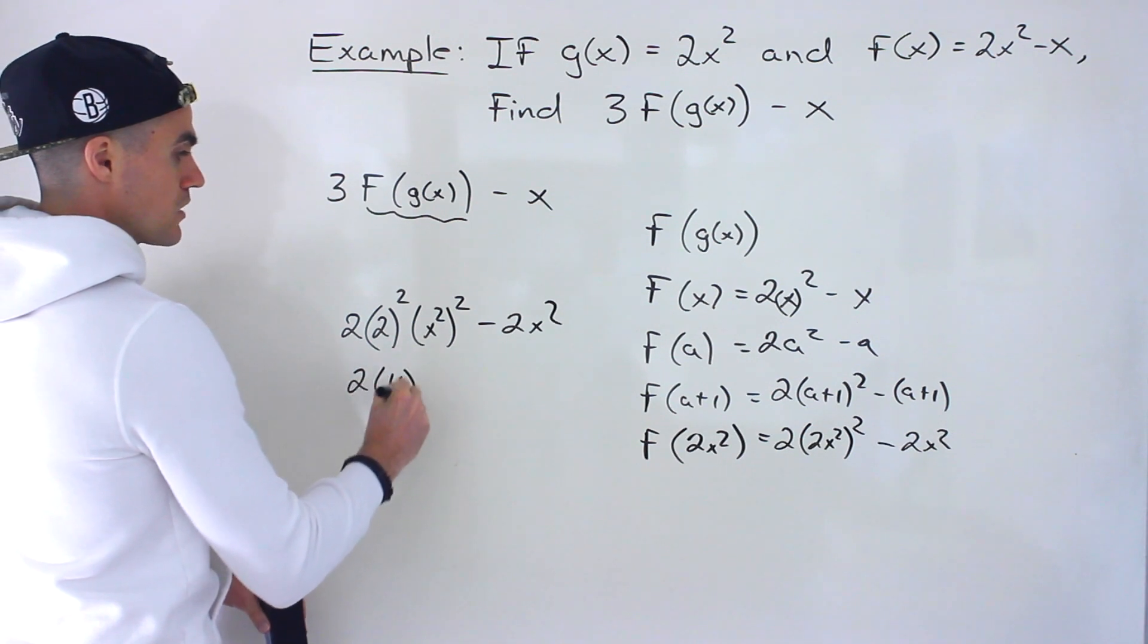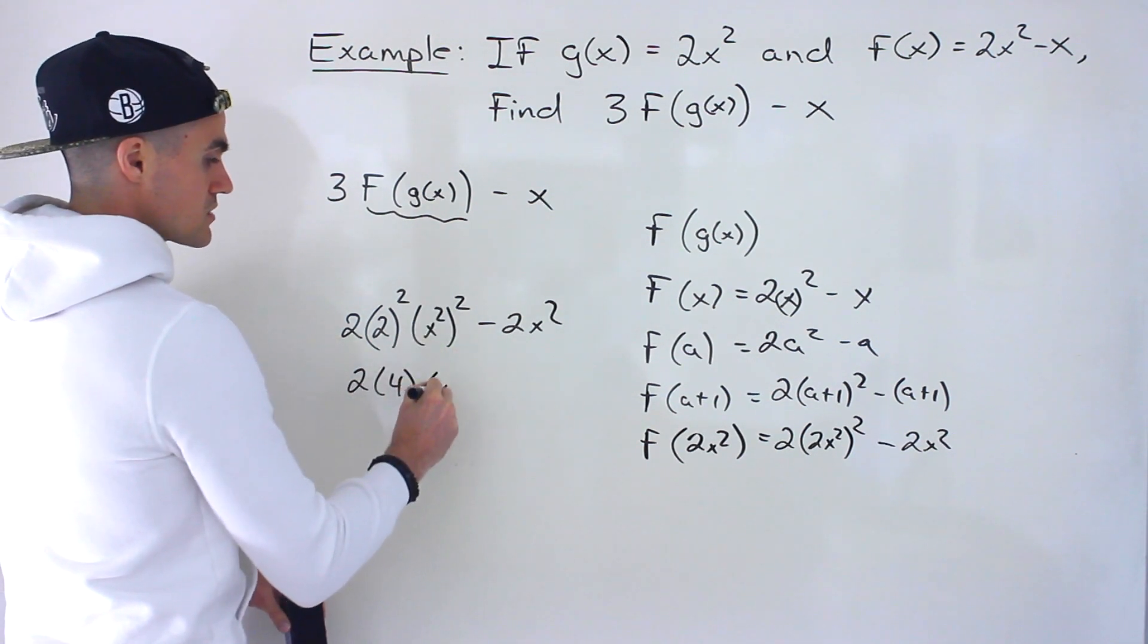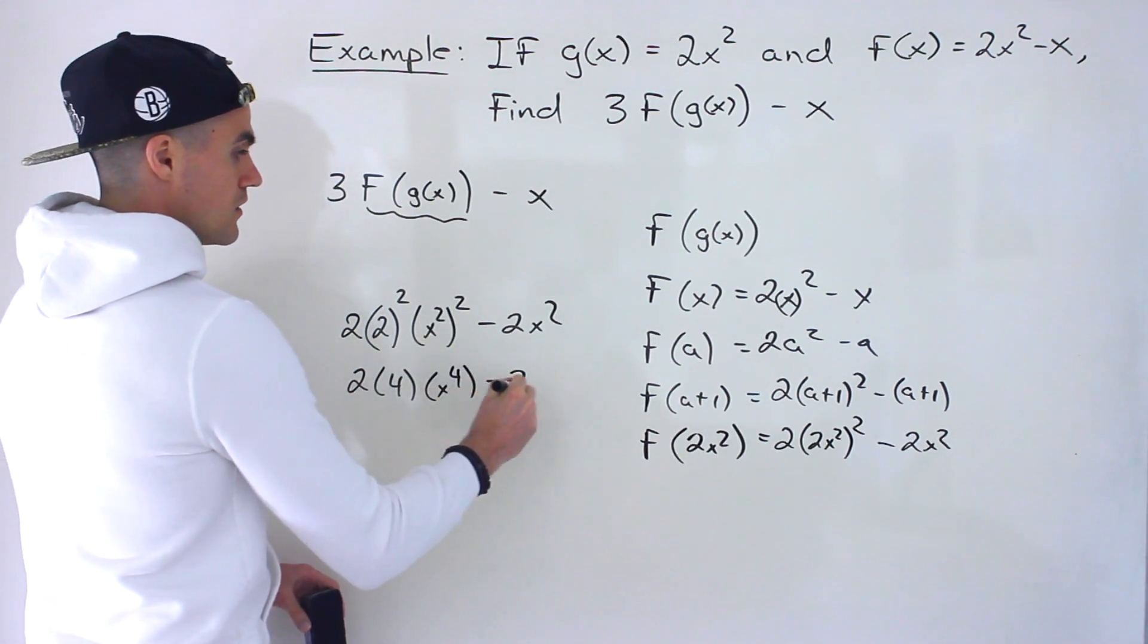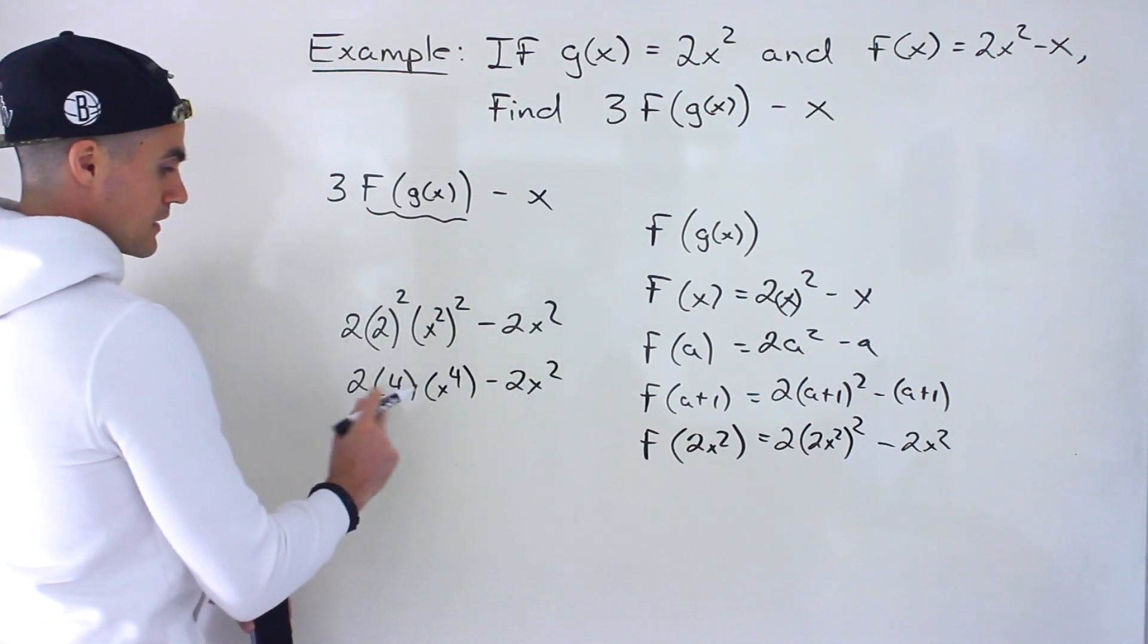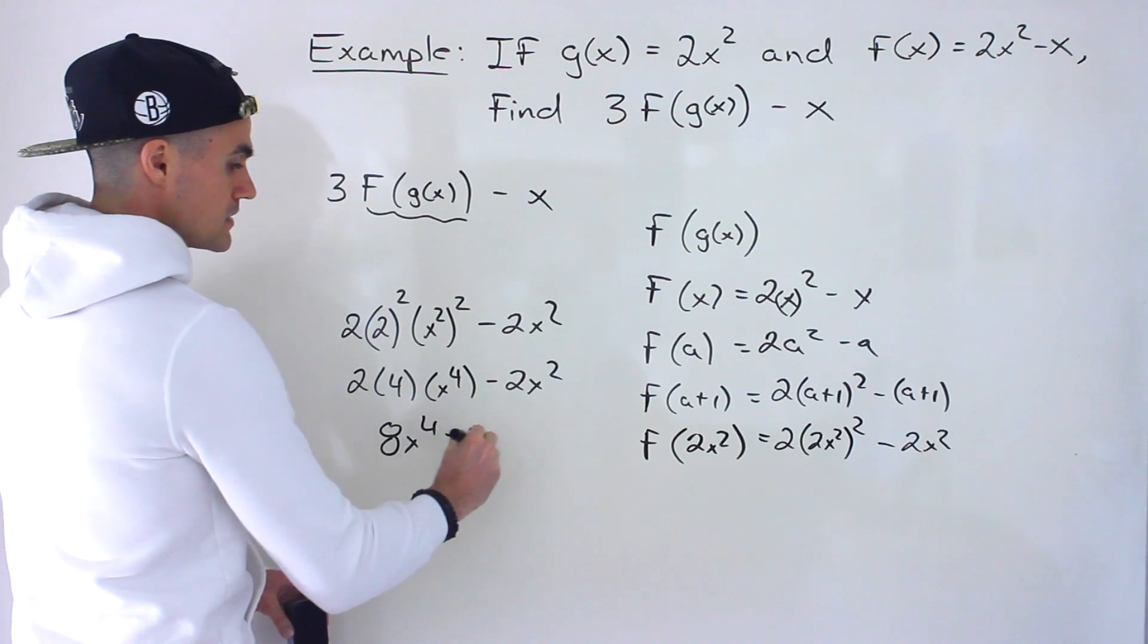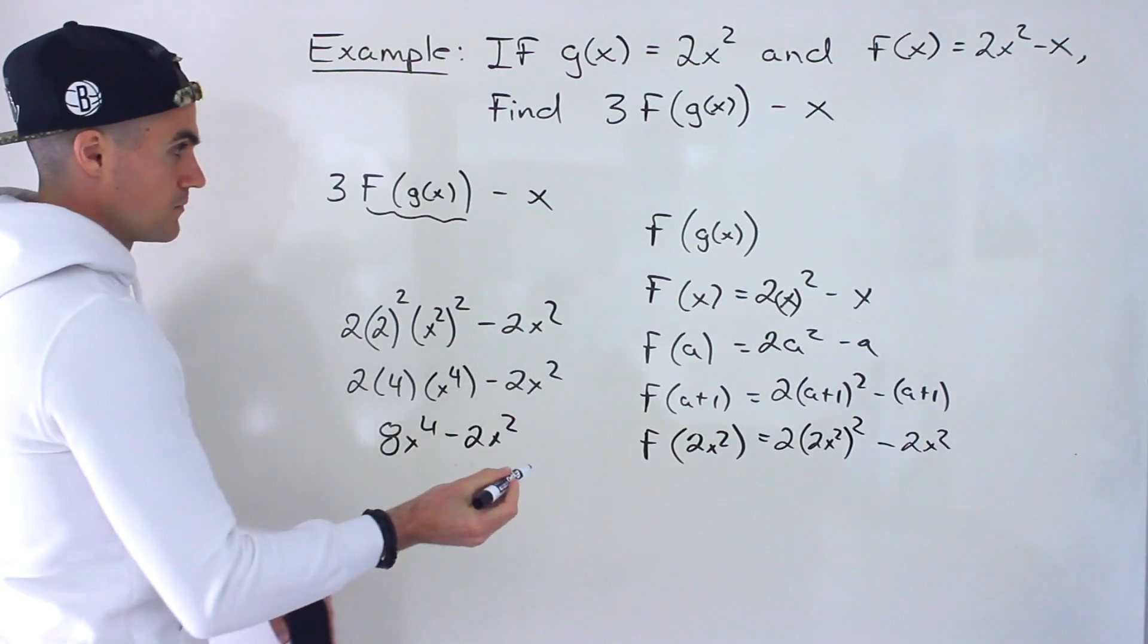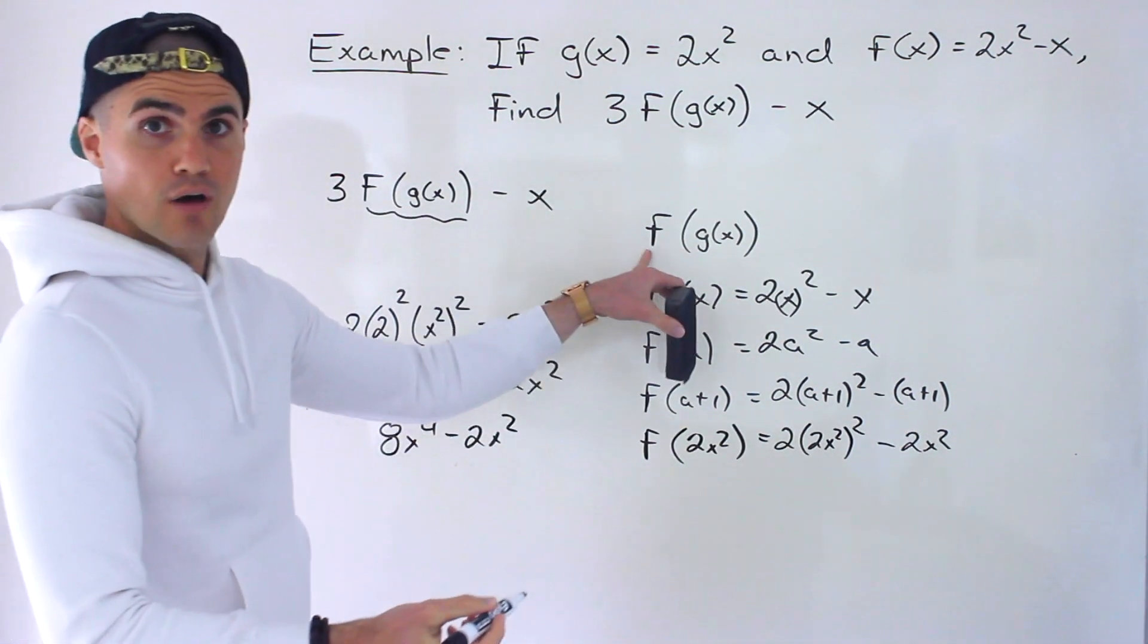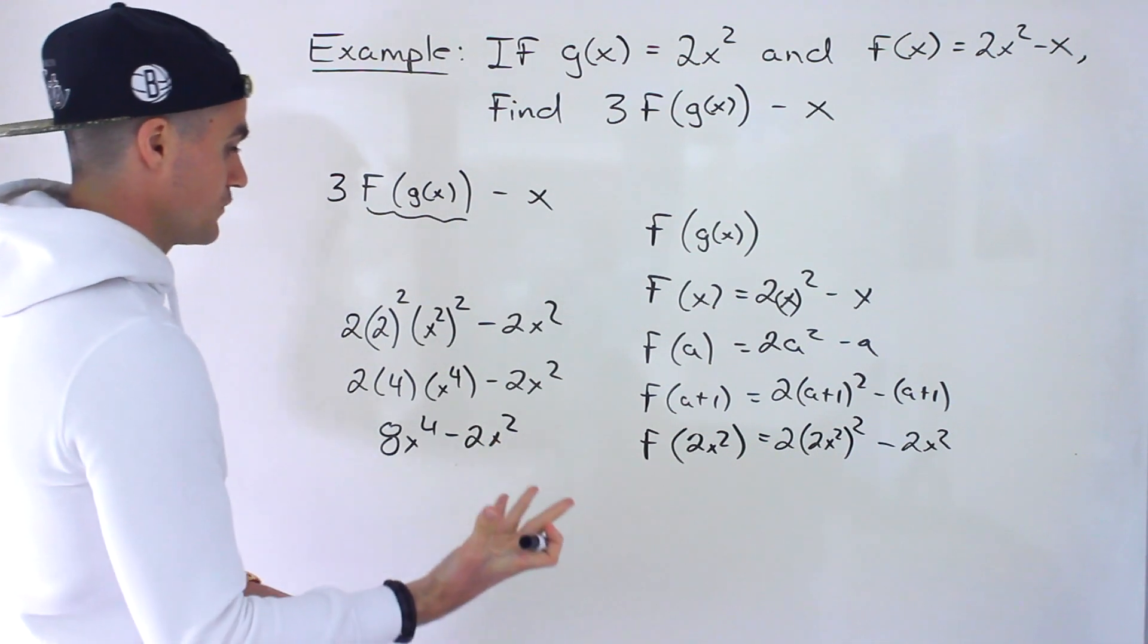So we'd have 2 times 4, x squared squared is just x to the 4. So we would have 8x⁴ minus 2x². That's what f of g of x simplifies to.